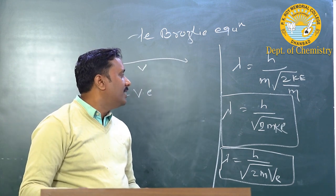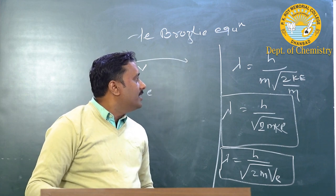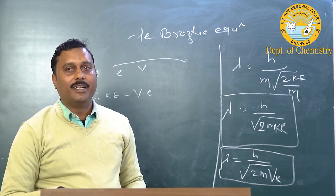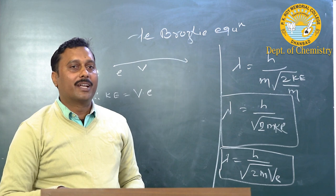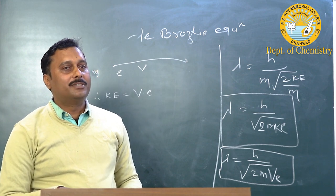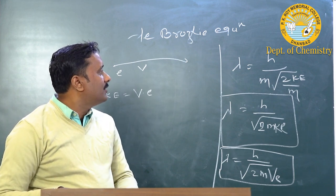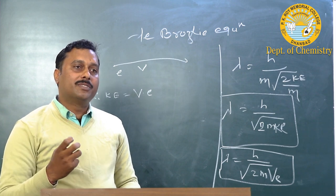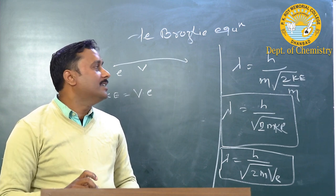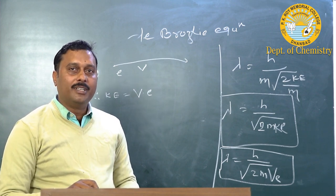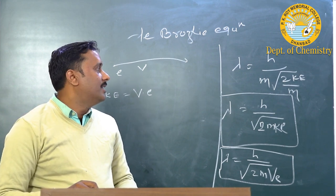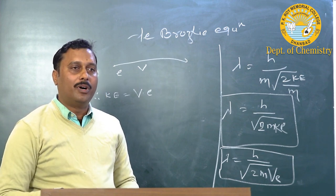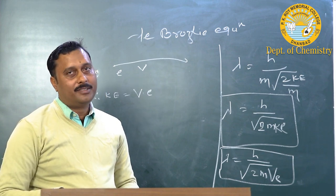Today we have discussed and derived the de Broglie equations. From this lecture we found that de Broglie equations can be written in different forms — we discussed about 3 to 4 forms. Thank you.